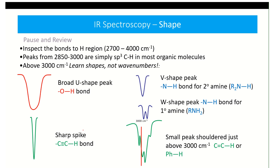There's a difference between the secondary and primary amines. Look at the vinylic C-H and the aromatic C-H — you can see that once we go beyond 3000, the splinter appears due to the sp² hybridization.